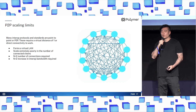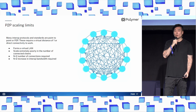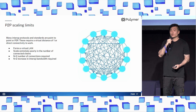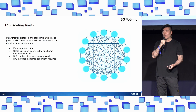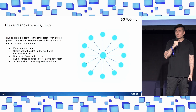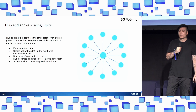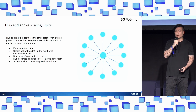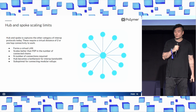Besides the rapid pace of growth, we have scaling issues with existing virtual LAN protocol architectures. Point-to-point systems require a virtual distance of one or direct connectivity to work. These scale poorly — O(n²) in the number of connections or increased interoperability bandwidth required. Hub-and-spoke solutions represent the other most popular category of interop protocols today. These require a virtual distance of two or one-hop connectivity. While they scale better than point-to-point systems in the number of connected chains, the hub then becomes the bottleneck for interoperability bandwidth. This solution is also suboptimal for connecting modular rollups within existing L2 ecosystems or intranets.